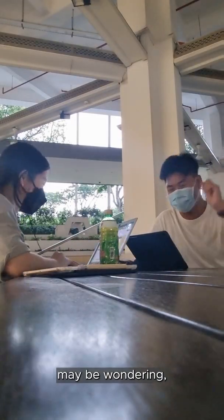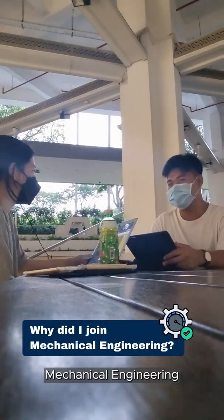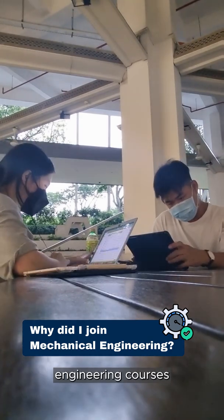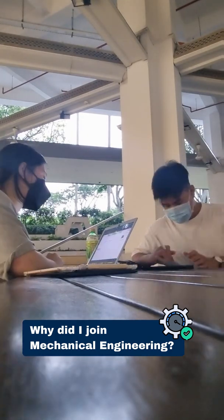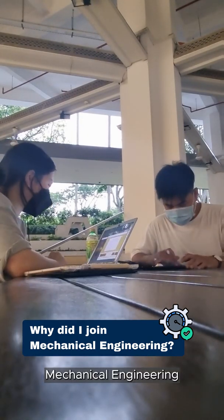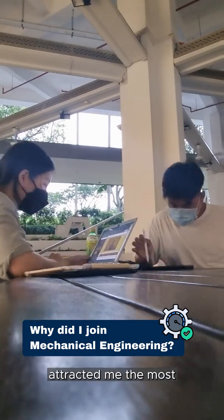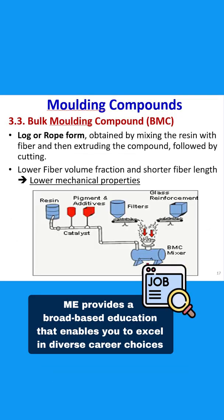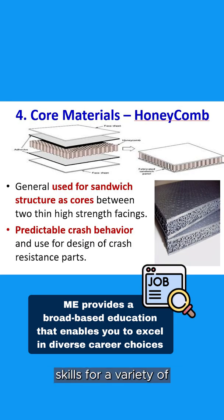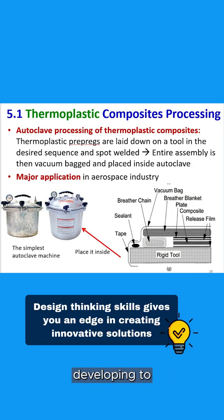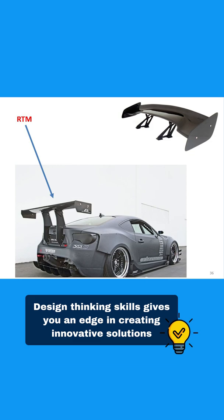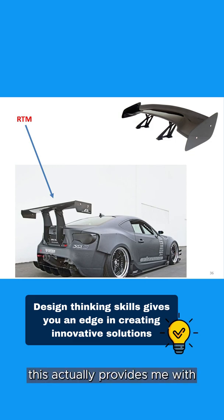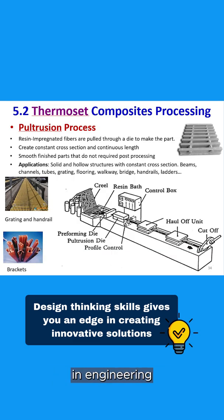For those who may be wondering why I pursued mechanical engineering instead of all the other engineering courses available — personally, I felt that mechanical engineering was the diploma that attracted me the most because of its broad-based and versatile nature. This course actually allows me to build mechanical engineering skills for a variety of departments, from designing and developing to manufacturing. This provides me with a strong foundation in engineering in which I could pivot from further down the road.